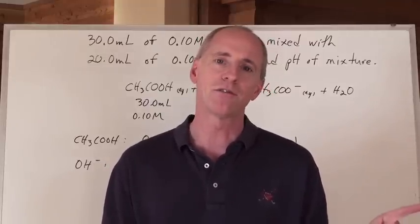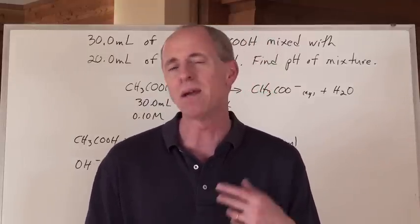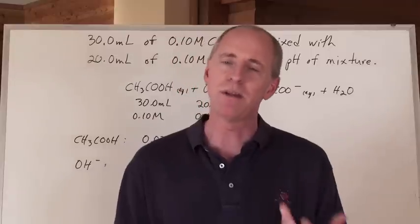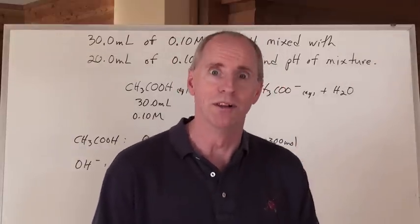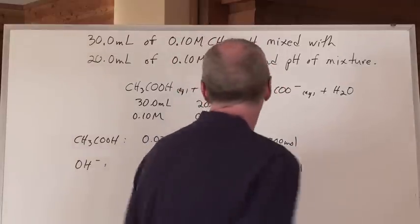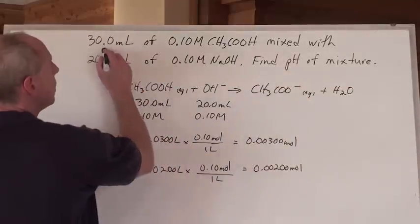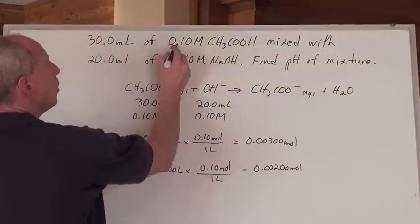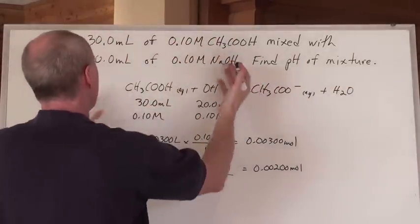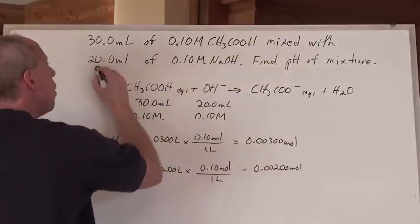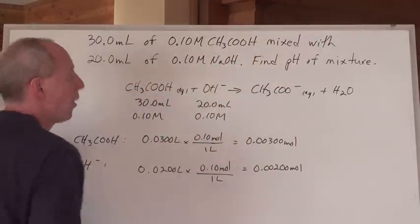But there's an easy way to break it down for yourself and make it doable. So here's what we're going to do. We're going to take 30 milliliters of 0.1 mole per liter acetic acid, and we're mixing it with 20 milliliters of 0.1 mole per liter NaOH.